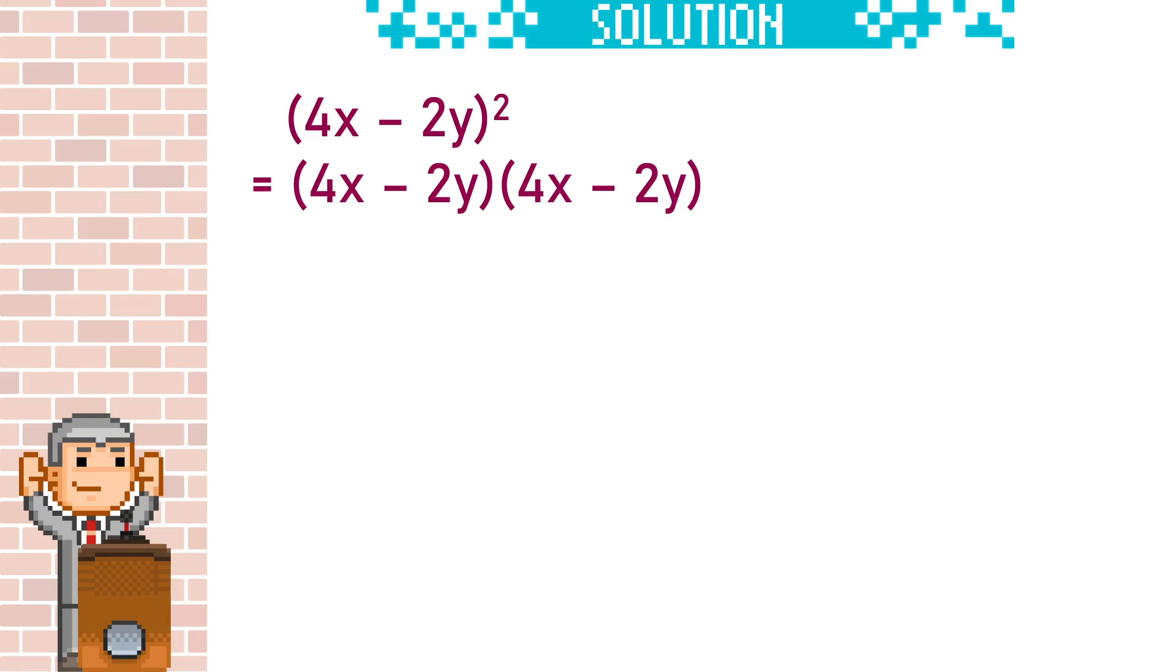So we're going to start off with the first two terms in each bracket, the 4x's, and times them together. Then the outside two, the 4x and the minus 2y. Then the inside two, minus 2y times 4x. And then the last, so L is the last, minus 2y times the minus 2y.